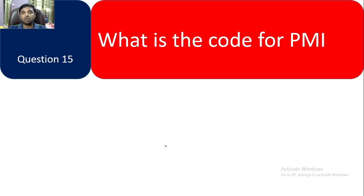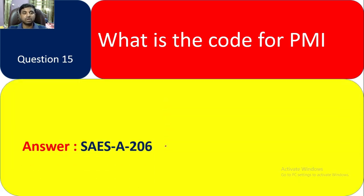Question 15: What is the code for PMI? In Aramco, the code standard you have to check for PMI is ASCESA206.